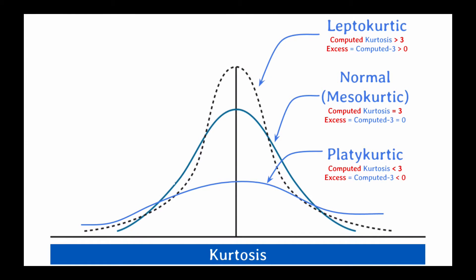Kurtosis is a measure of the degree to which the distribution is more or less peaked than a normal distribution. A normal distribution has a computed kurtosis of 3 and an excess kurtosis of 0. A leptokurtic distribution has excess kurtosis greater than 0 and has a computed kurtosis greater than 3.